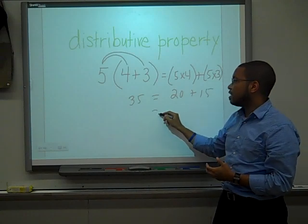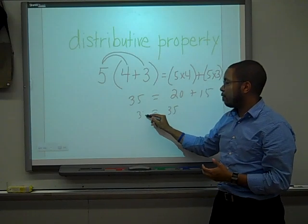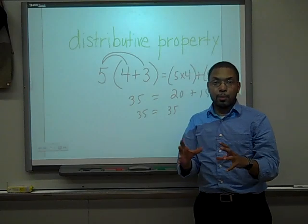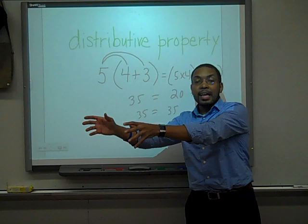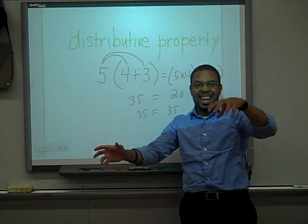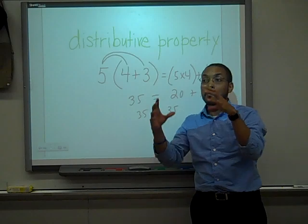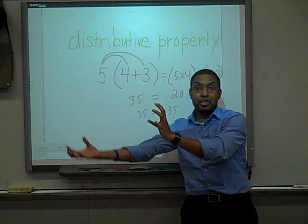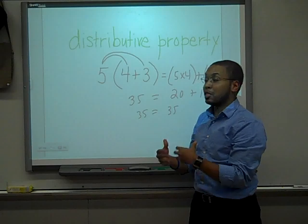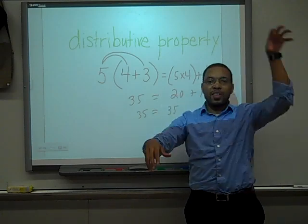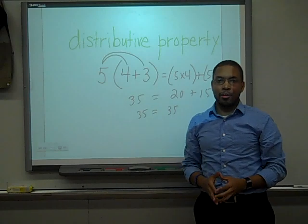Well, 20 plus 15 is 35 and both of these give you the same answer. So the distributive property says any term can be distributed to the inside terms inside the parentheses through multiplication. But that multiplication gets distributed to each term. That's why it's called the distributive property of multiplication over the additions that are present.